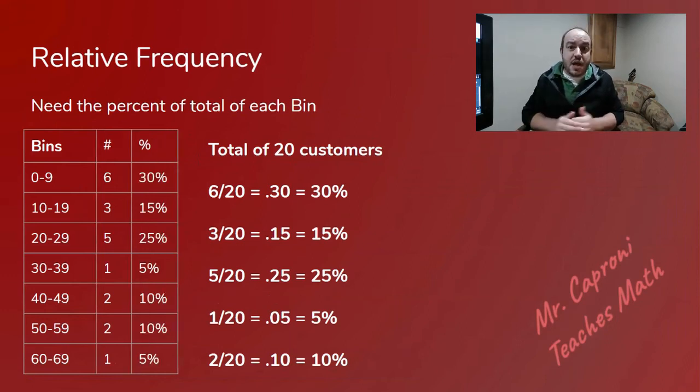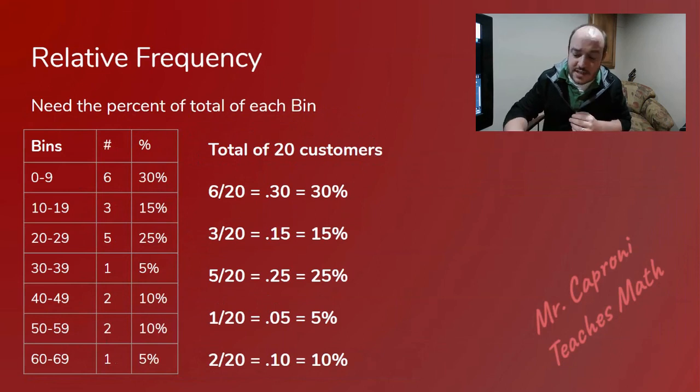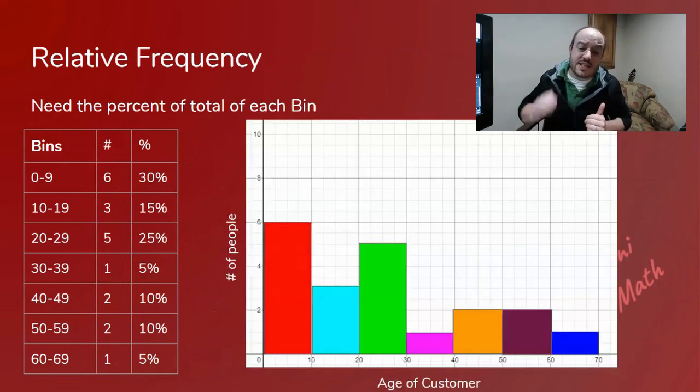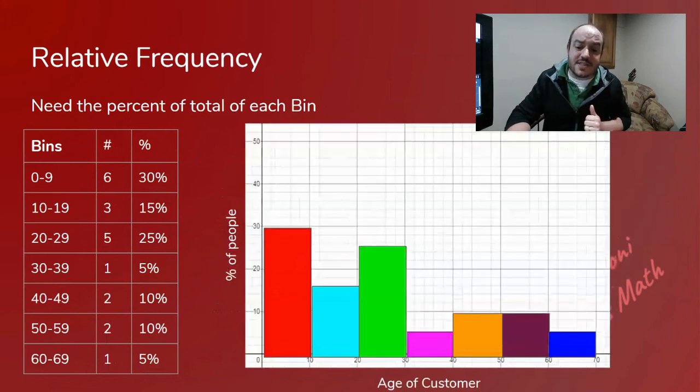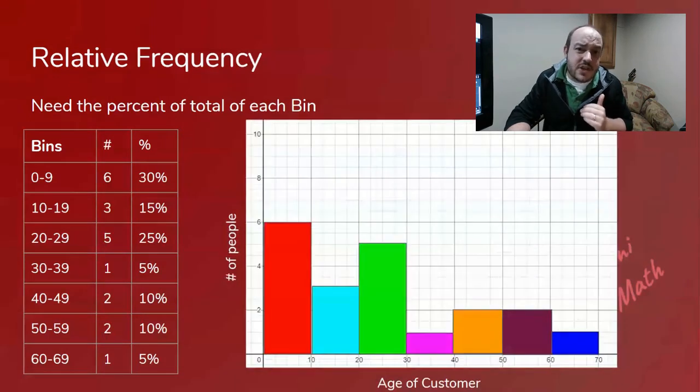But from there this is what's crazy: the graph hardly changes. Here's what our graph originally was for our histogram, but now our new one looks like this. As you can see there's like no change. Why? Because relative to all of the other bars nothing is changing.